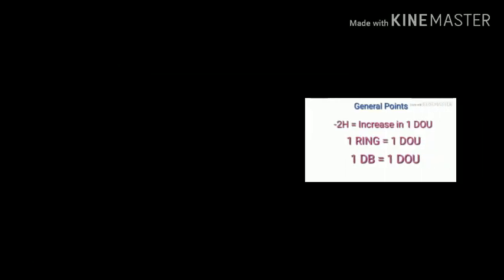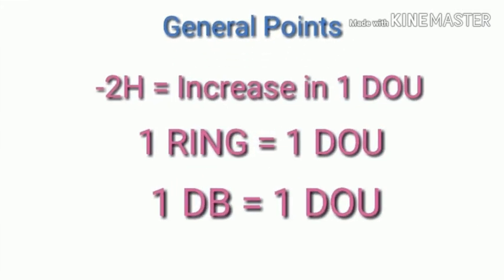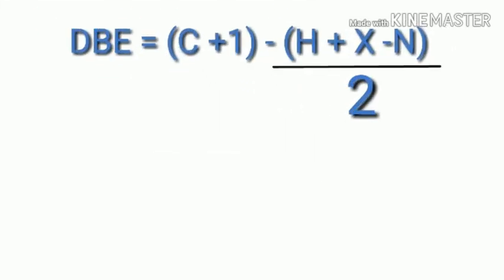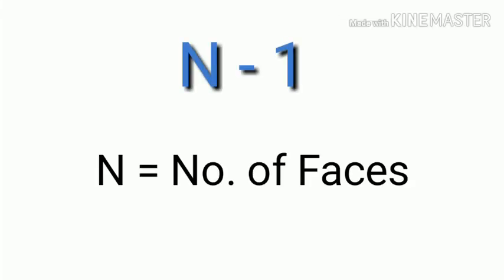To summarize: remember the general points for double bond equivalent, the main formula, and the n minus 1 formula for complex cage compounds. If you remember all of this, you will understand double bond equivalent fully.